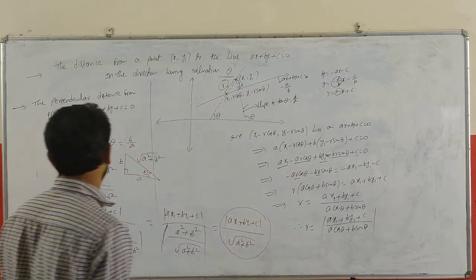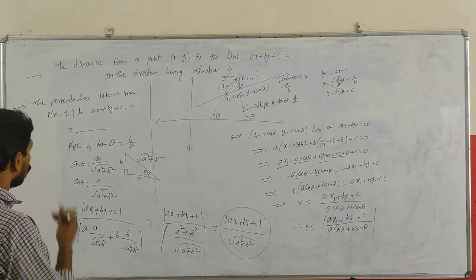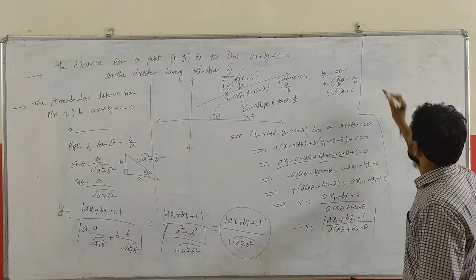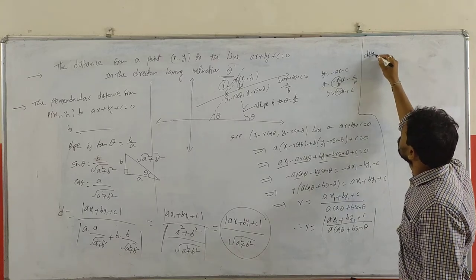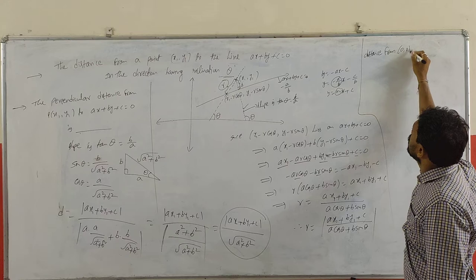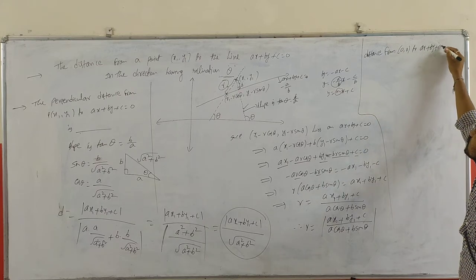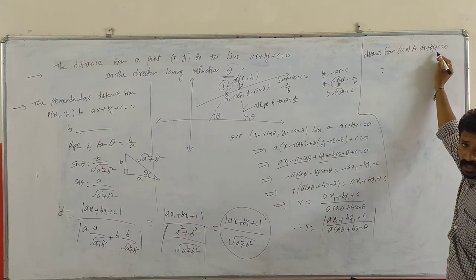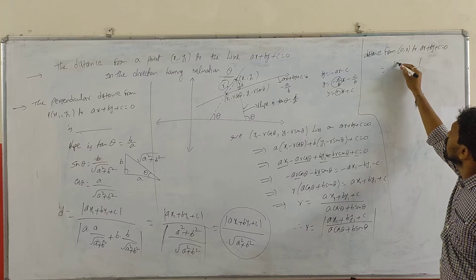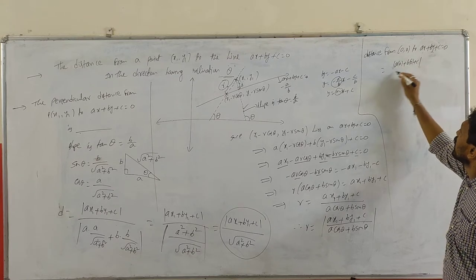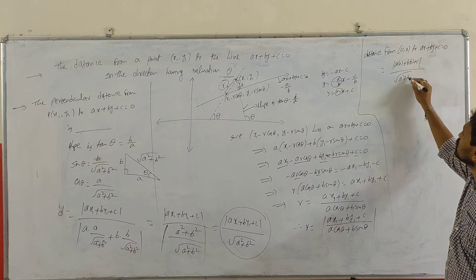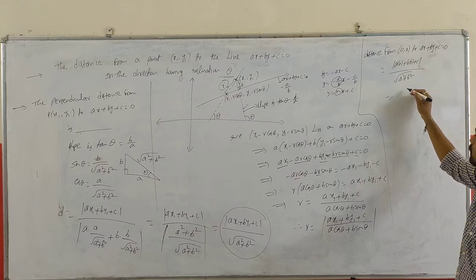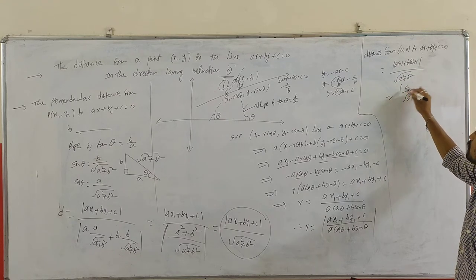Similarly, the distance from the origin (0, 0) to the line Ax + By + C = 0 is: substitute (0, 0) in the equation — that gives A·0 + B·0 + C = C in the numerator — divided by √(A²+B²). So the distance from origin to the line is |C| / √(A²+B²).